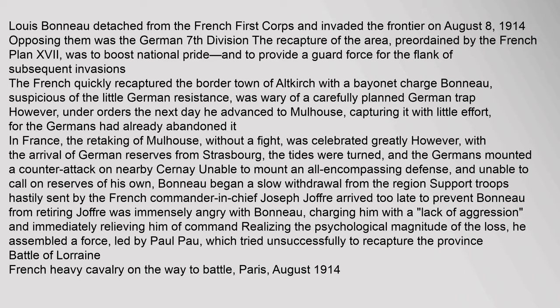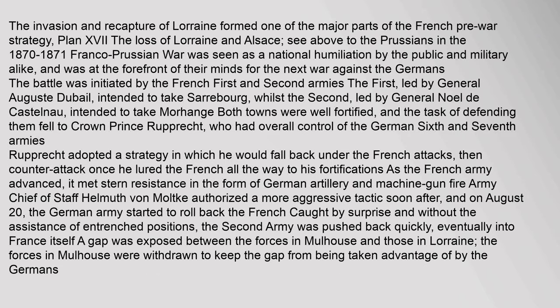Realizing the psychological magnitude of the loss, Joffrey assembled a force led by Paul Pau, which tried unsuccessfully to recapture the province. Battle of Lorraine: French heavy cavalry on the way to battle, Paris, August 1914. The invasion and recapture of Lorraine formed one of the major parts of the French pre-war strategy, Plan XVII. The loss of Lorraine and Alsace to the Prussians in the 1870–1871 Franco-Prussian War was seen as a national humiliation by the public and military alike. The battle was initiated by the French First and Second Armies: the First, led by General Auguste de Bail, intended to take Cerebourg, whilst the Second, led by General Noël de Castelnau, intended to take Morhange.